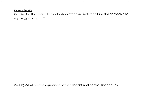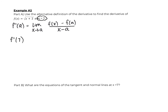Alright, let's take a look at example number two. Same concept, but now I want to find the derivative at x equals seven of this function. Let's start by writing our formula: f prime of a is the limit as x approaches a of f of x minus f of a, all over x minus a. So to find the derivative at x equals seven, we substitute seven for a everywhere: f prime of seven is the limit as x approaches seven of f of x minus f of seven, all over x minus seven.